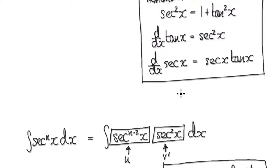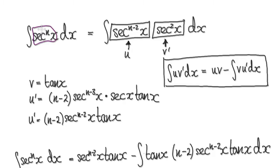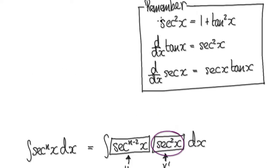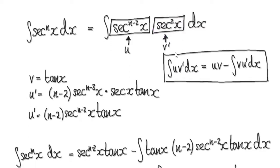So let's start. Let's try and integrate secant to the power of n. We'll use integration by parts — break this up as one block multiplying another block. This block here is easy to integrate. Remember, when you differentiate tan it gives you secant squared, so when you're given secant squared it's easy to integrate — it will be tan of x. Break this into two blocks, and because this is easy to integrate, set this to be v prime.